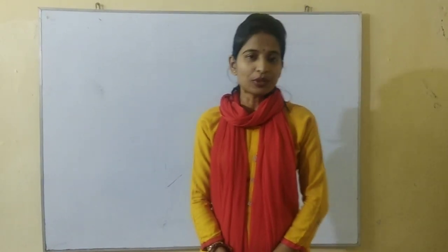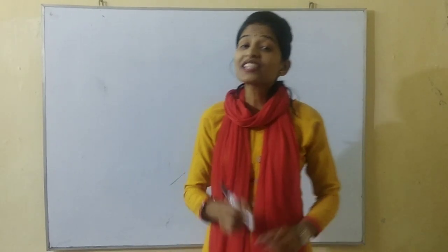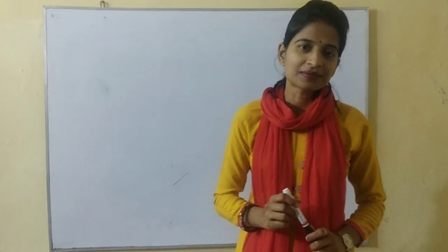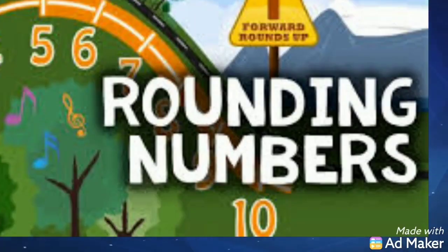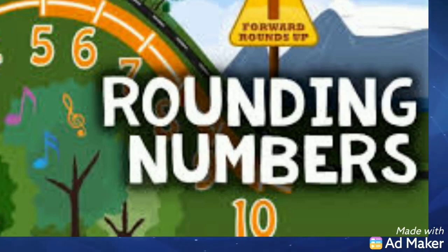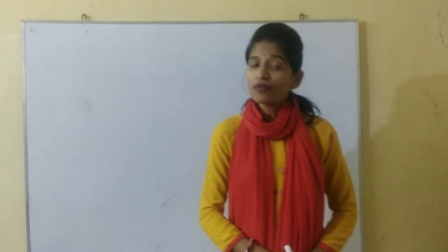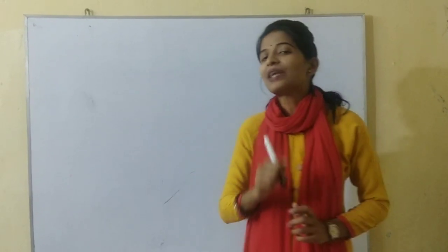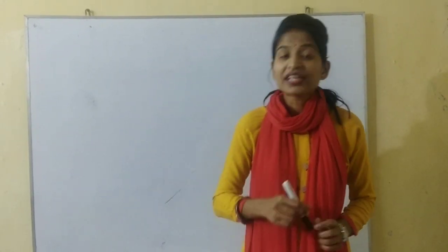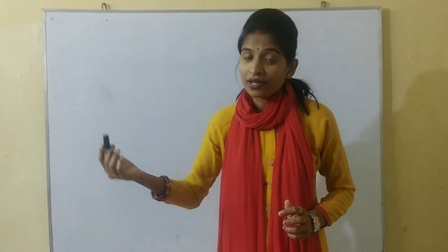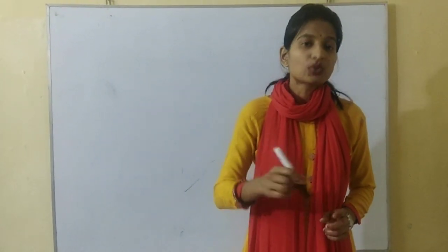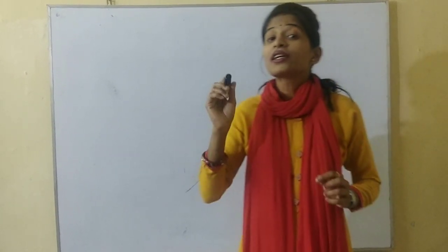Hello students. In the previous videos, I had taught you about the place value system. And in this video, we will discuss about rounding off numbers. When we round off a number, we give the approximate value rather than the exact value. Numbers can be rounded to the nearest ten, nearest hundred, nearest thousand and so on. In this video, I will teach you how to round off a number to the nearest ten, nearest hundred, and nearest thousand.